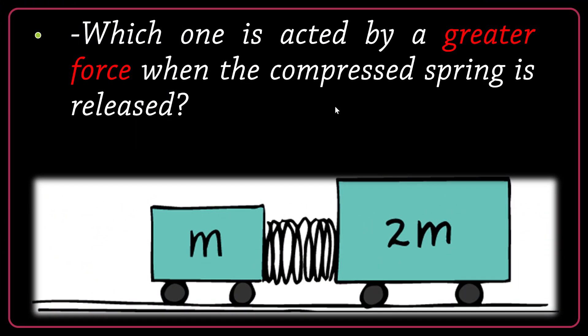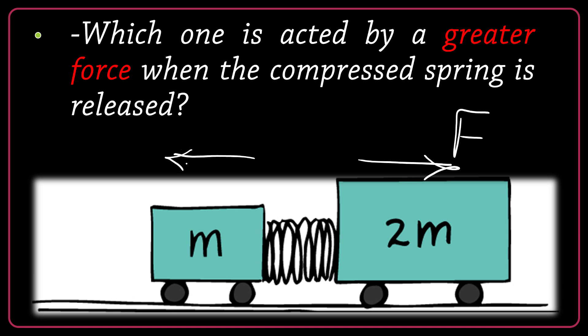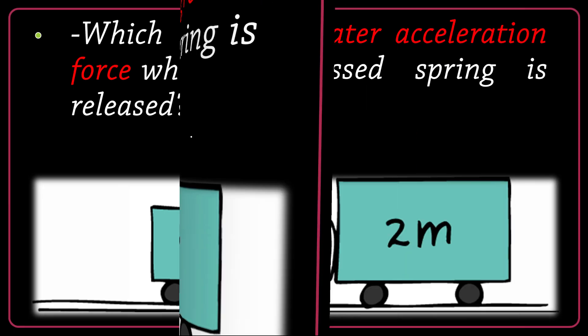Which one is acted on by a greater force when a compressed spring is released? Suppose we have a couple of objects — one has larger mass, actually twice larger than the other. The spring has already been compressed to a very high potential energy. If I release the system, the objects will get separated. Can I say they are acted on by the same equal and opposite forces, even if they have different masses? The answer is yes. If the force acted on 2m is F, necessarily the same negative F is acted on the other one, regardless of the size of the objects.